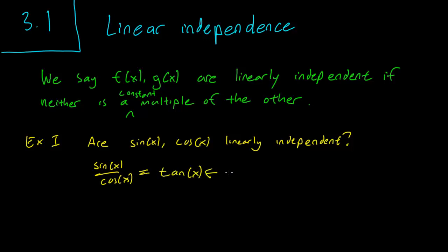But this is not a constant. So since tan(x) is not a constant, it follows that sin is not a constant multiple of cos, and cos is not a constant multiple of sin. And this means that sin(x) and cos(x) are linearly independent.